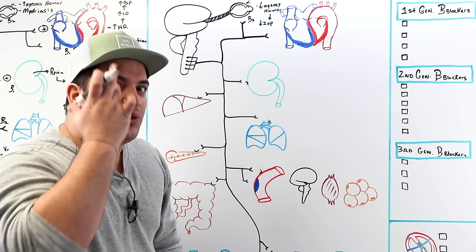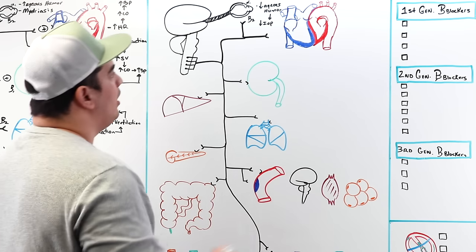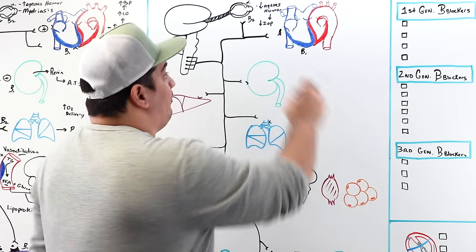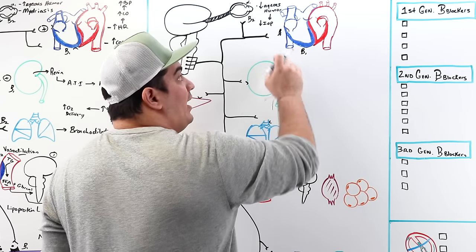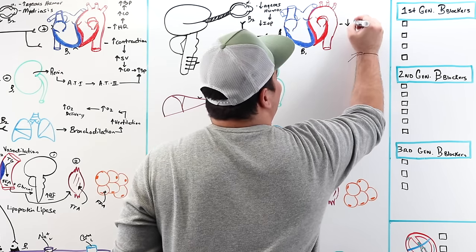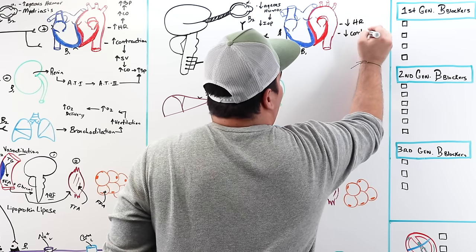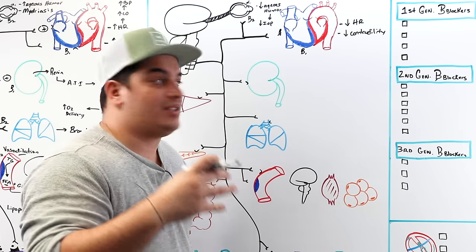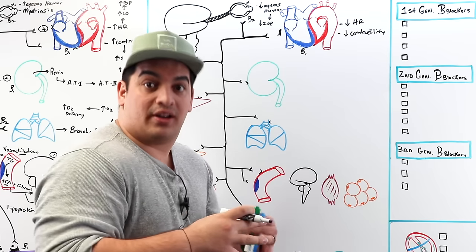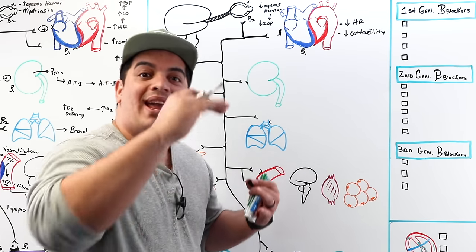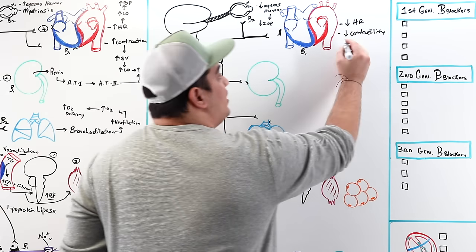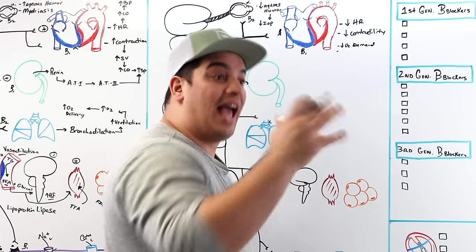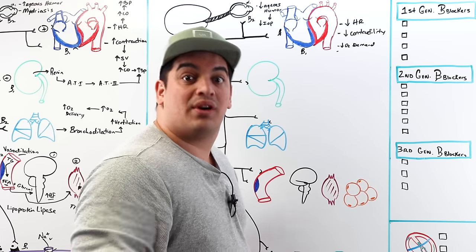Blocking beta-1 receptors on the conduction system and ventricular myocardium decreases heart rate and decreases contractility. This means the myocardium is not consuming as much oxygen — oxygen demand decreases. This is important in heart failure, post-myocardial infarction, coronary artery disease, and angina pectoris. Additionally, decreasing heart rate and contractility drops blood pressure, making beta blockers useful in hypertension. Blocking the AV node also decreases conduction and can help treat arrhythmias.